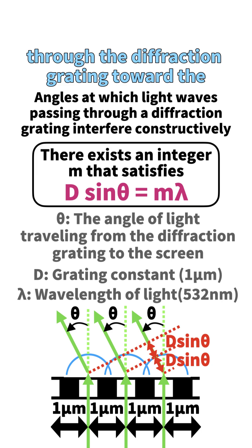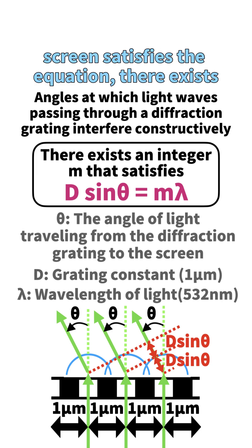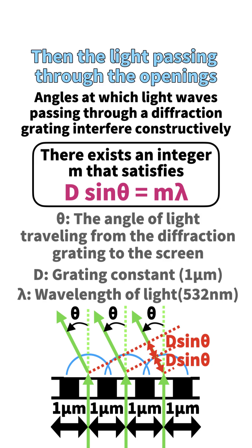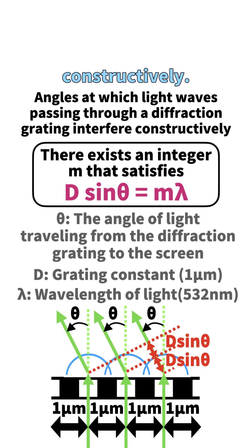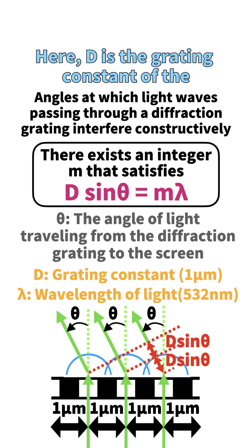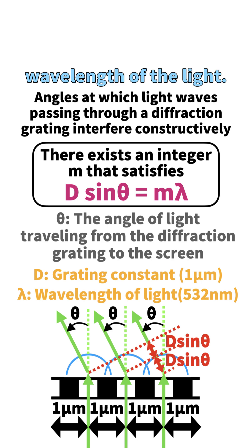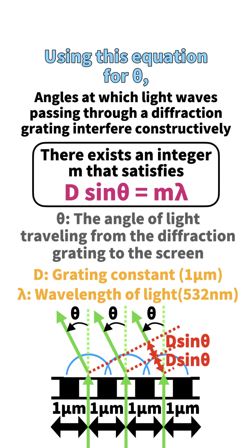...there exists an integer m such that d sinθ = mλ, then the light passing through the openings of the grating will interfere constructively. Here d is the grating constant of the diffraction grating and λ is the wavelength of the light.